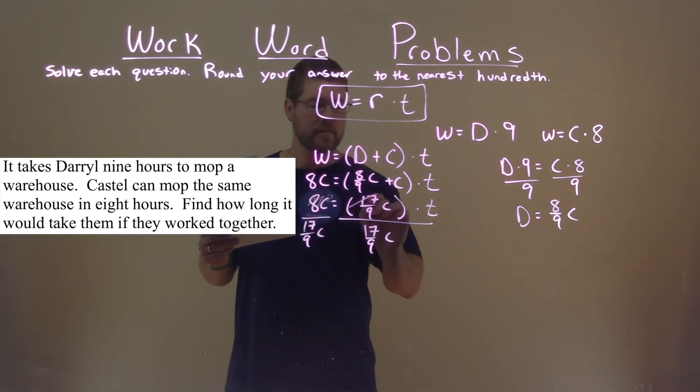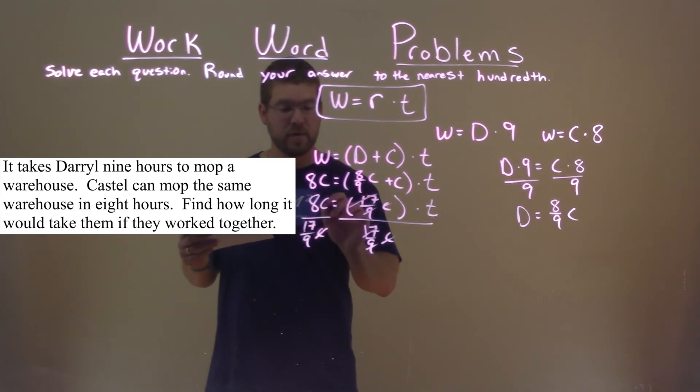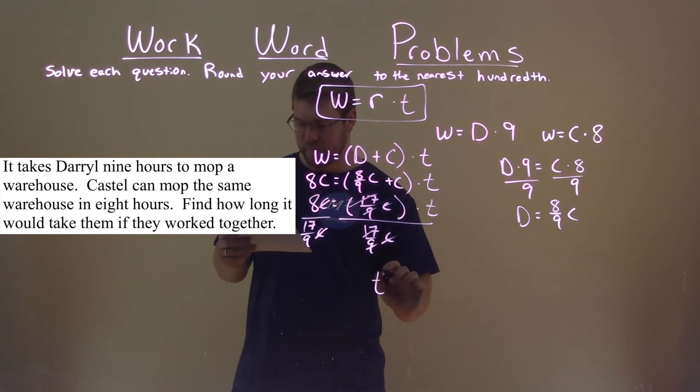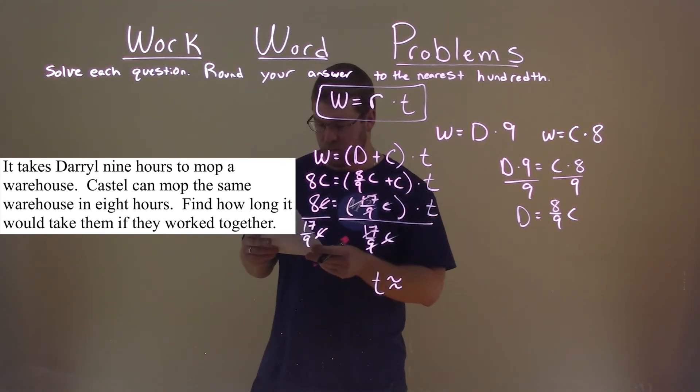And what happens? Seventeen ninths cancels, as well as the C value. C variable here cancels as well, and we're left with T by itself, and this is approximately here.